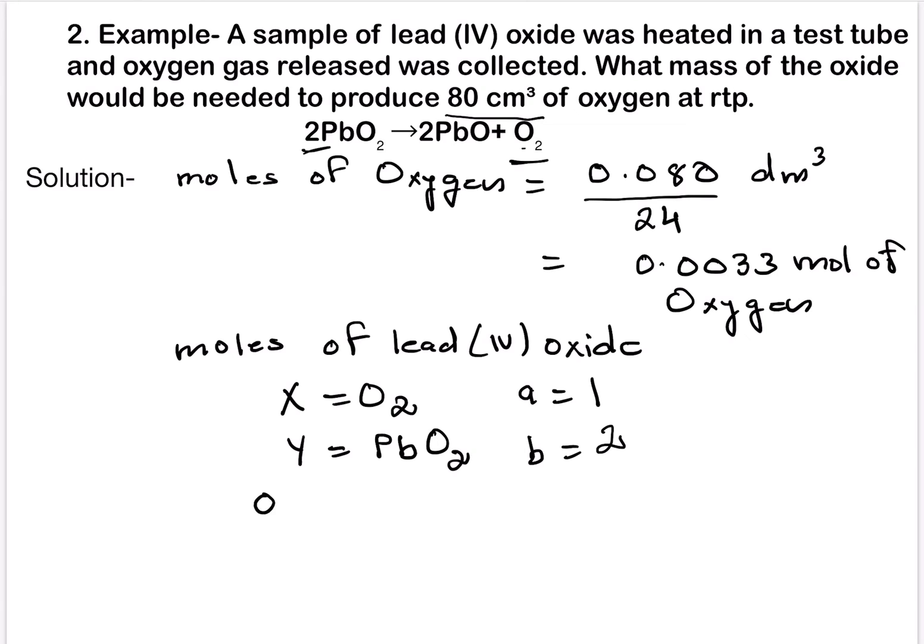Therefore 0.0033 into 2 divided by 1 equals to 0.0066 moles of PbO2. So now we have got moles of lead (IV) oxide that is PbO2.